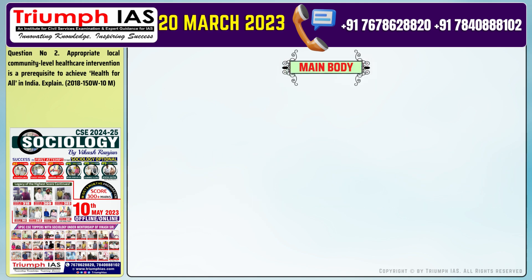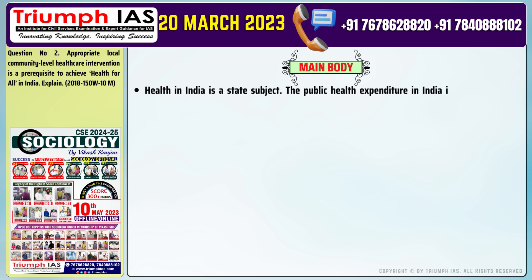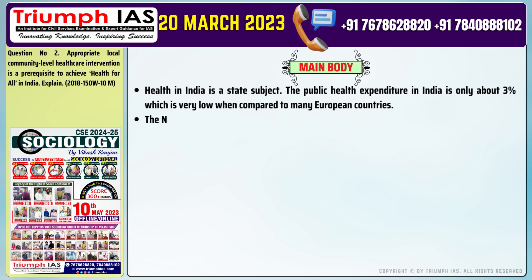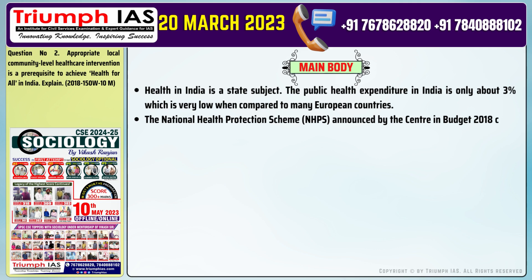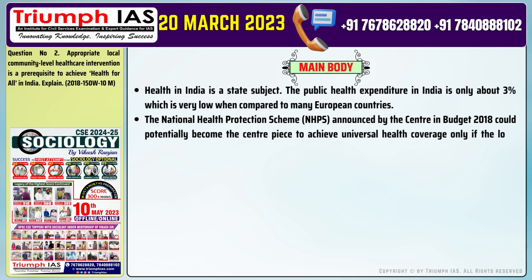Moving on to the main body of the answer. Point 1: Health in India is a state subject. The public health expenditure in India is only about 3%, which is very low when compared to many European countries. Point 2: The National Health Protection Scheme (NHPS), announced by the Centre in Budget 2018, could potentially become the centrepiece to achieve universal health coverage only if the local community-level healthcare system is strengthened.